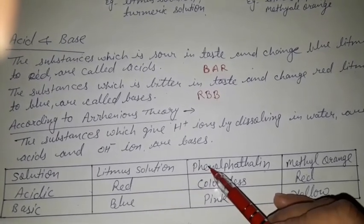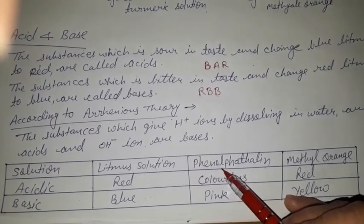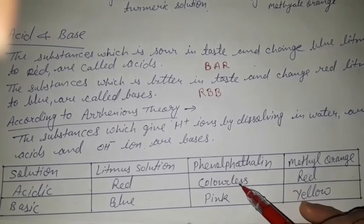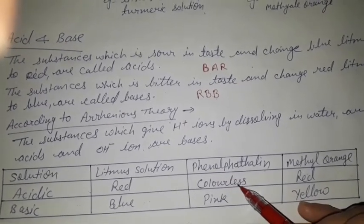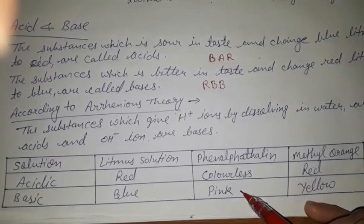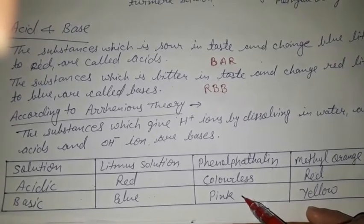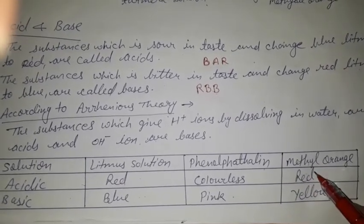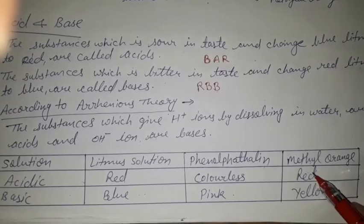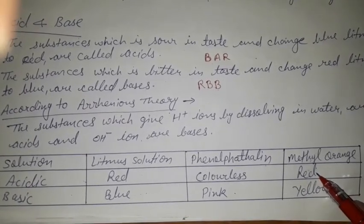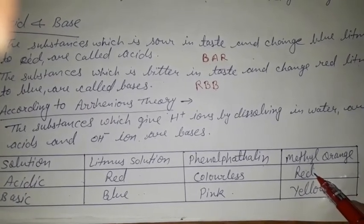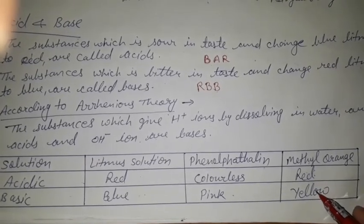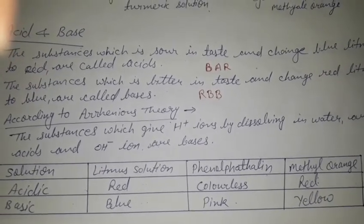When phenolphthalein comes in contact with an acidic solution it becomes colorless, and in a basic solution it turns pink. When methyl orange comes in contact with acid, it turns red, and with a basic solution it turns yellow.